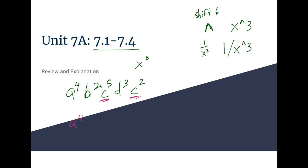So then this final answer would be a to the fourth b2 c7 d3. Now I only have one c in my problem, so that is the final answer.